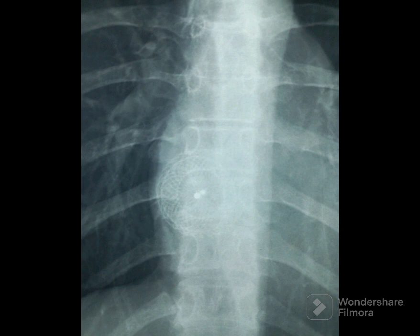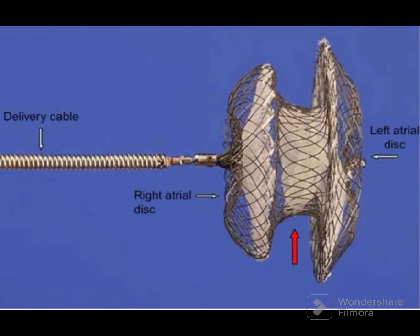It is an ASD closure device used for atrial septal defect. The actual device has two discs — one for the right atrium and another for the left atrium.